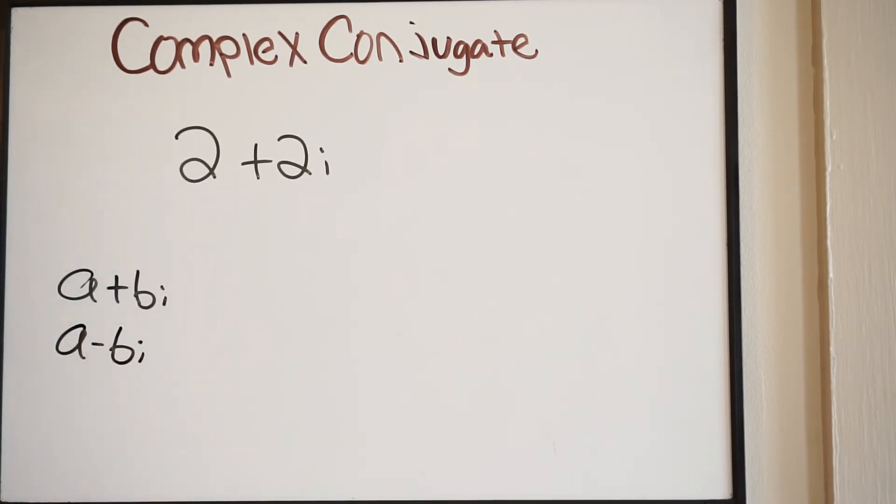So again, you have a real part, in this case a, and your imaginary part bi. So again, here's my a, here's my bi. So it's a complex number.